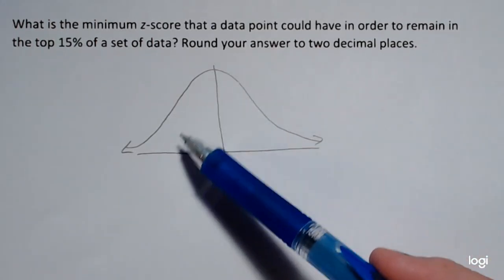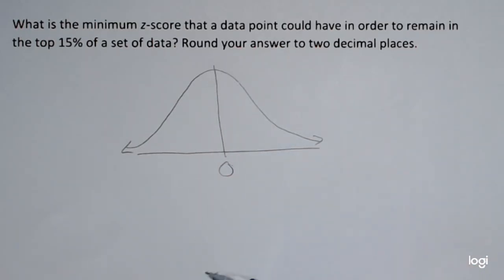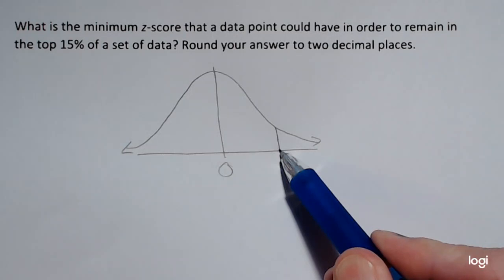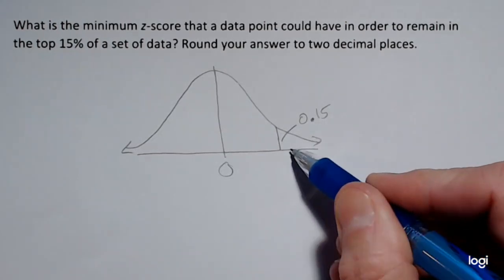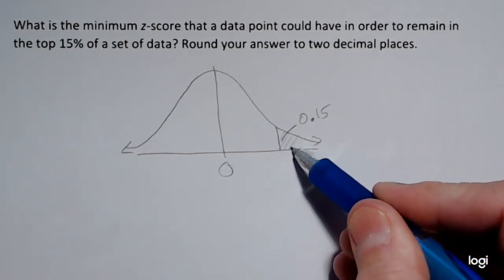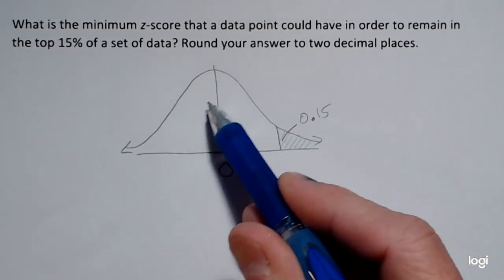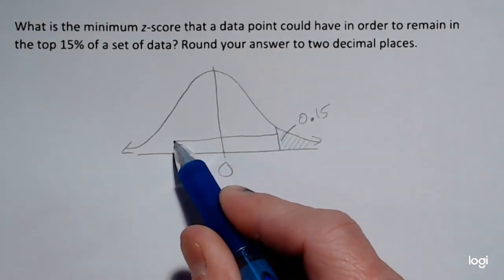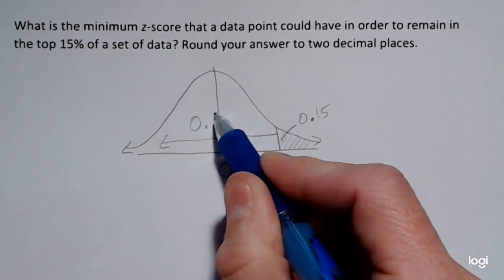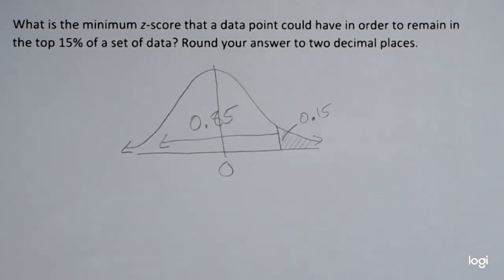The total percentage under the curve or area under this bell curve is 1 or 100%. So if I'm given an area of 0.15 in this upper tail, this would be the top 15%, and the fact that this total area under this curve is 1 or 100%, then that necessarily makes the rest of this area 0.85 because 0.85 plus 0.15 is equal to 1 or 100%.